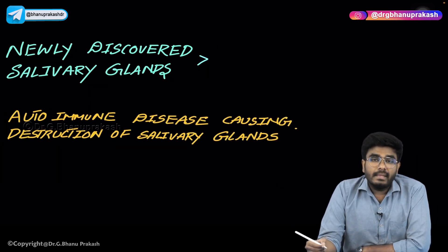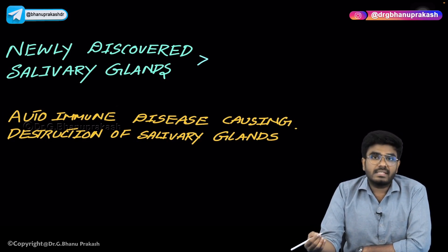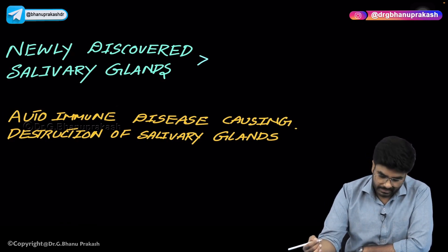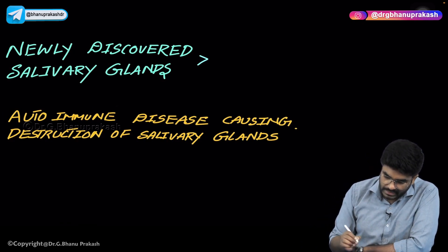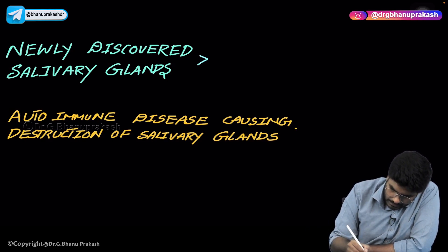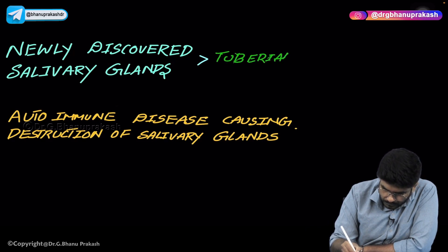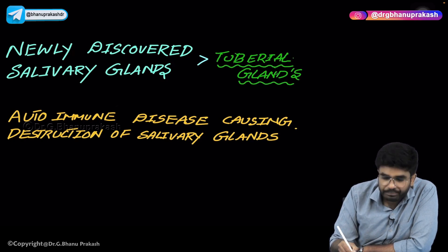There is a newly discovered salivary gland found about a year ago — this can be a question in your future exams. The newly discovered salivary glands are called tuberial glands.